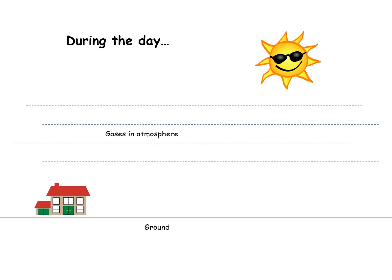During the day, the sun gives out heat and light, and this heat and light comes to the Earth in the form of shortwave radiation. It can pass through all of the gases in the atmosphere, heating the Earth.